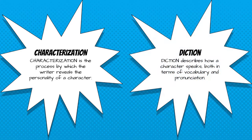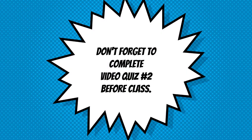Another important technique is diction. In terms of literary characters, diction is basically how the character speaks. What kinds of words does she use? Does she have a large and complex vocabulary or a rather limited one? Does she have an accent? Does she use certain phrases repeatedly? So when reading comics, pay attention to those speech bubbles — not just what is said, but how it's said. All right, once again, thanks for watching. Remember to take Video Quiz 2 on Brightspace before our next class.